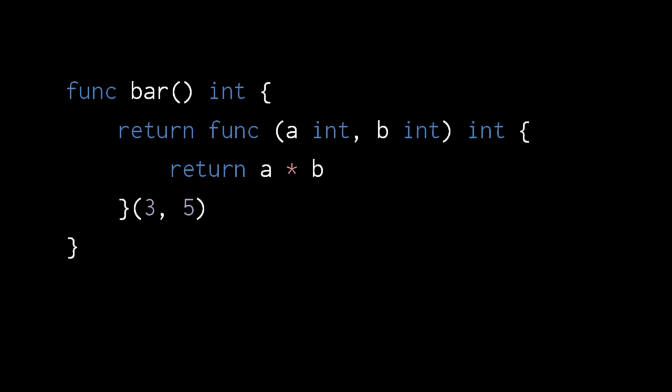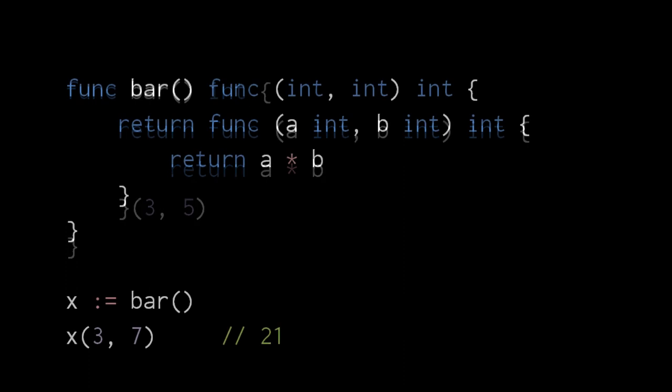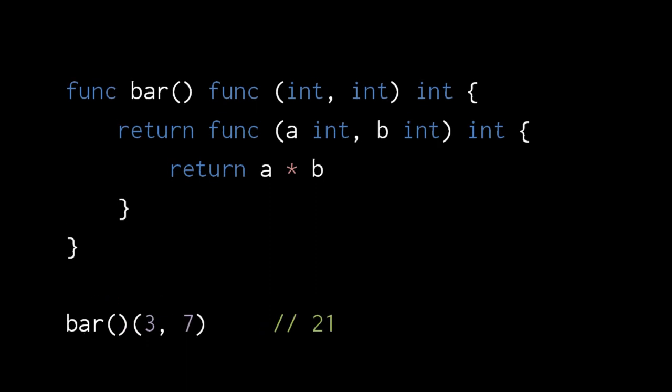You might assume that we can declare inner functions with names, as we can in JavaScript, but Go does not allow this. Like in JavaScript, we can immediately invoke anonymous functions. Here the function isn't stored in a variable, but rather just called, and its return value is returned from the outer function. Functions can also be used as return types and parameter types. Here, bar returns a function taking two int parameters and returning an int. We assign the returned function to a variable x, and then invoke x with the arguments 3 and 7. If we want to use the returned function only once, we can just directly invoke the returned function without first assigning it to a variable.